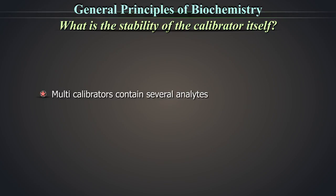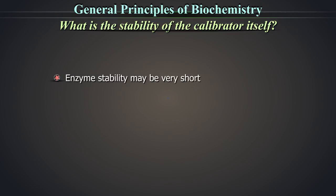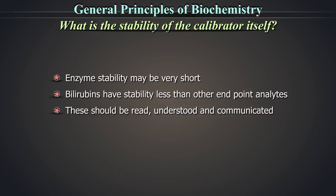Multi-calibrators contain several analytes. Different analytes in multi-calibrators will have different stabilities. For instance, the enzyme stability may be very short. Bilirubins may have stability less than other endpoint analytes. These should be read, understood and communicated.